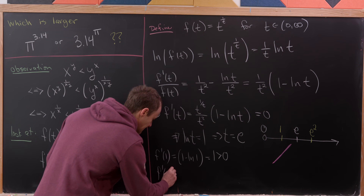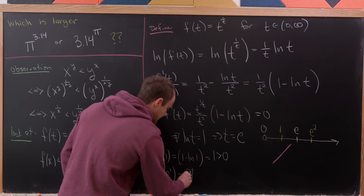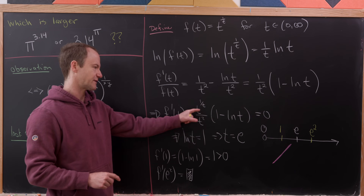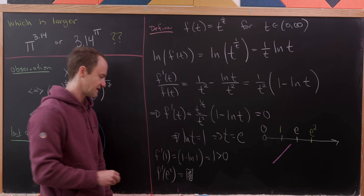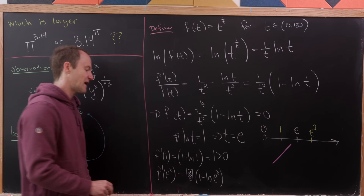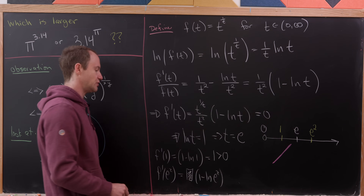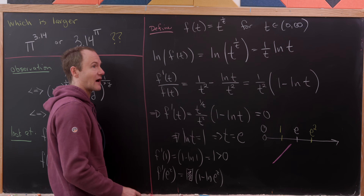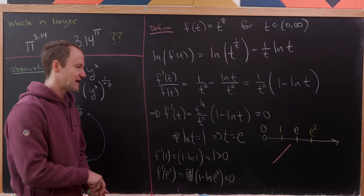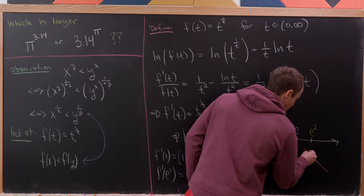Evaluating f'(e²): the prefactor t^(1/t)/t² is positive, and 1 − ln(e²) = 1 − 2 = −1, which is negative. So f'(e²) < 0, meaning the function is decreasing to the right of e.